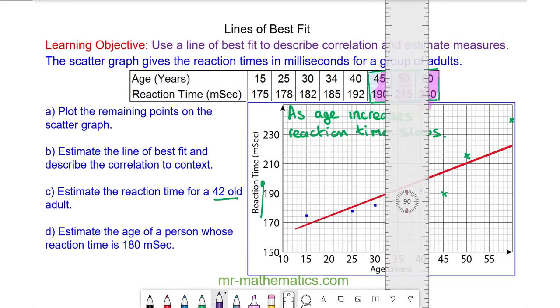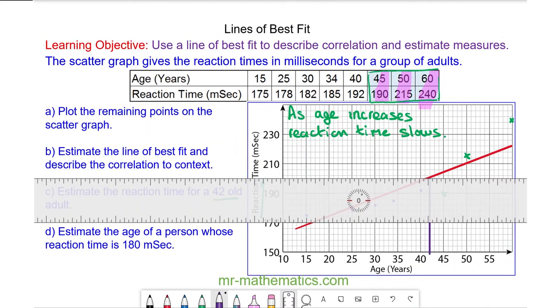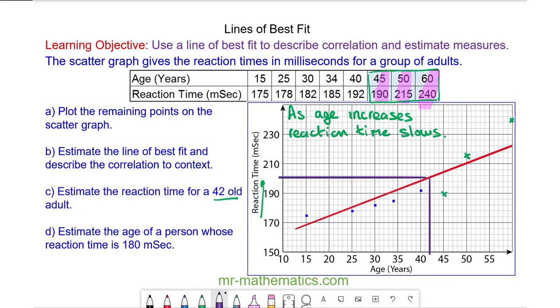We draw a vertical line on the x-axis to the line of best fit at 42 years old, and then we draw a horizontal line to reaction time. You can see a 42 year old is likely to have a reaction time of about 200 milliseconds.